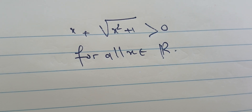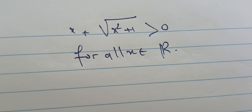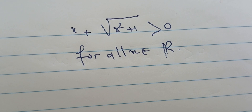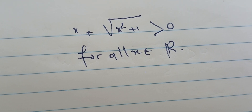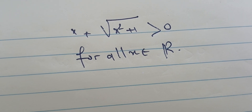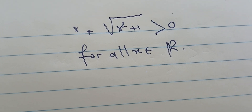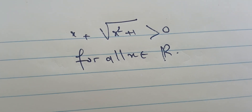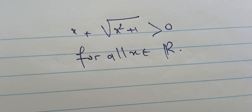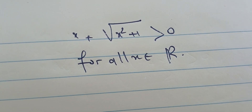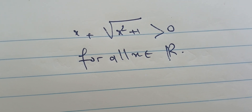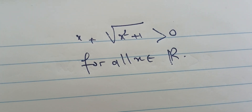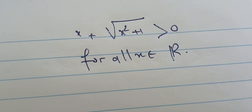Welcome back. In this video we're going to try to prove that x plus the square root of x squared plus one is strictly bigger than zero for all x in ℝ. We're going to use some easy techniques that we have seen, so even high schoolers can understand this proof. We're going to split this proof into three cases: when x is zero, when x is bigger than zero, and when x is less than zero.